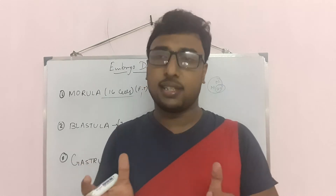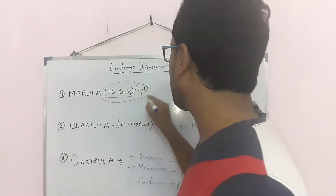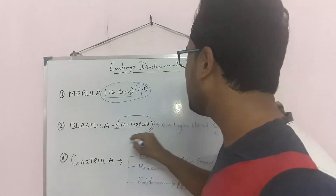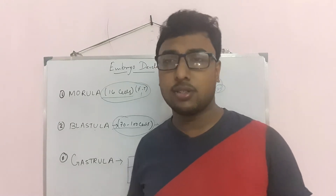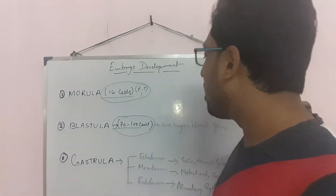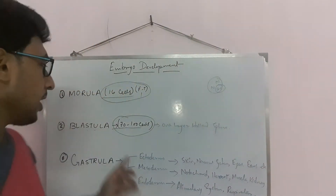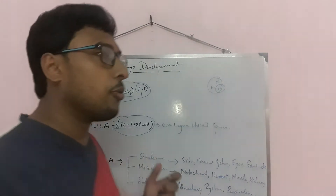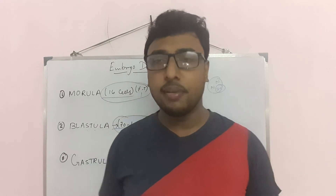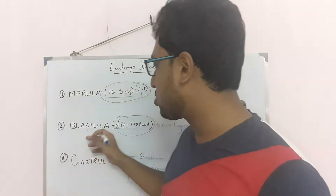After morula comes blastula. The morula has 16 to 17 cells with no distinct layers, but in blastula there are approximately 70 to 100 cells. The cells continue to divide rapidly, forming a hollow sphere with one layer — that structure is the blastula. So blastula is a one-layered hollow sphere containing 70 to 100 cells.